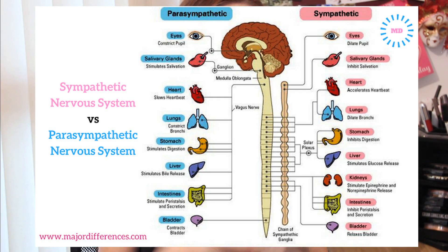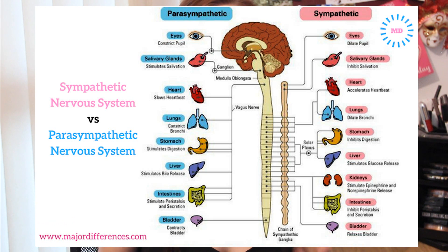The sympathetic nervous system controls what we call your fight or flight responses — the ones where you need to get ready to act or do something. The sympathetic nervous system might increase your heart rate, it might dilate your pupils; it gets you ready for action and responds to action.